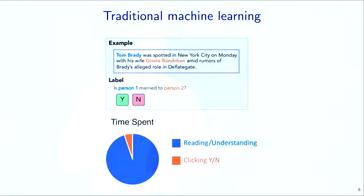Here is how it normally works. You show an annotator an interface with a sentence — Tom Brady, and so on — and ask: is person one married to person two? They read it and click either yes or no. But most of the time is actually spent reading and understanding; the actual clicking of yes or no is trivial. Yet the amount of information we're getting from this process is just one bit, a yes or a no. So something seems like we should be able to do a little bit better.